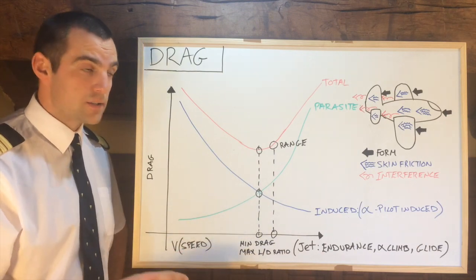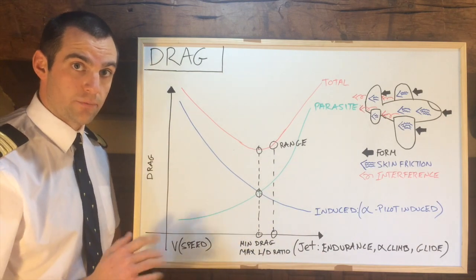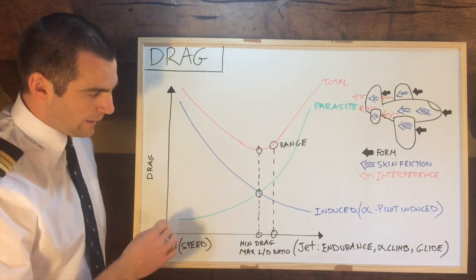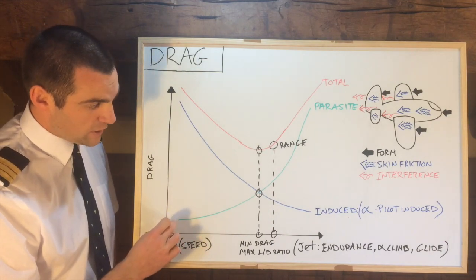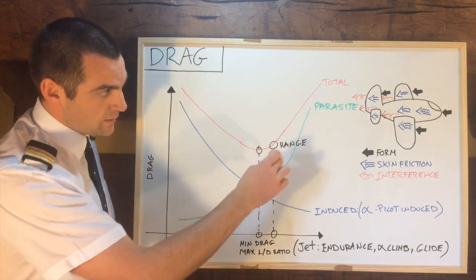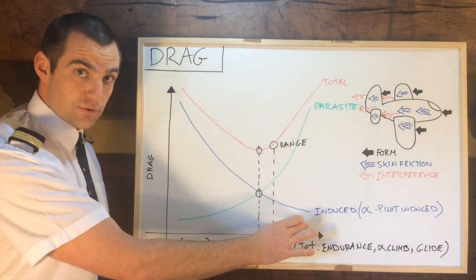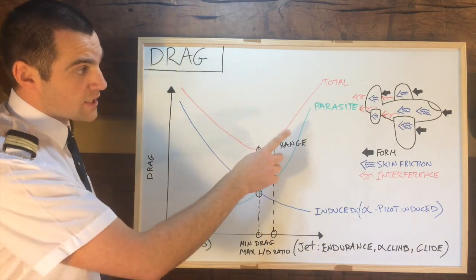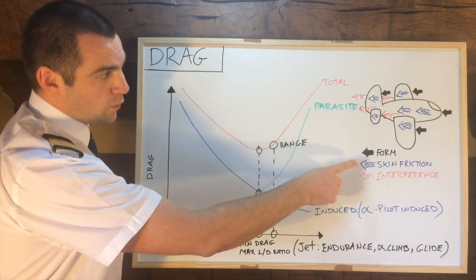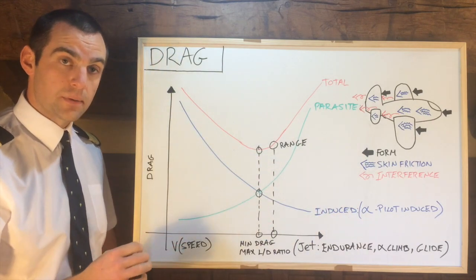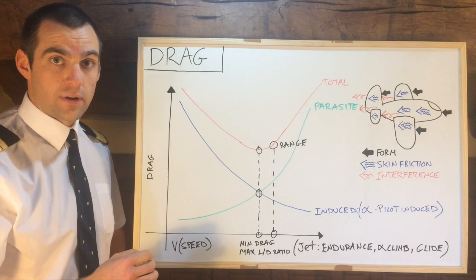The other type of drag is called parasite drag. Now this has various subforms which I'll go over in a minute. Parasite drag, as you can see here in green, increases exponentially as speed increases. Now what are the types of parasite drag? We have form, skin friction, and interference. The three subcategories of parasite drag.